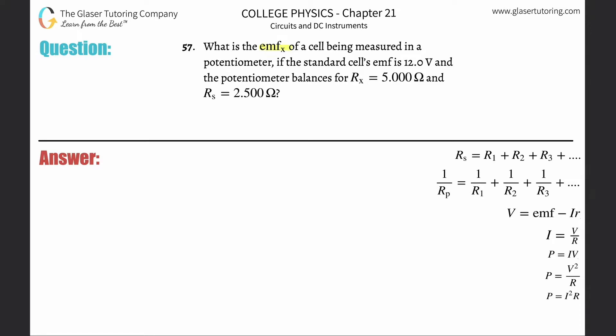Number 57. What is the EMF X of a cell being measured in a potentiometer if the cell's EMF is 12 volts and the potentiometer balances for R sub X of 5 ohms and R sub S of 2.5?